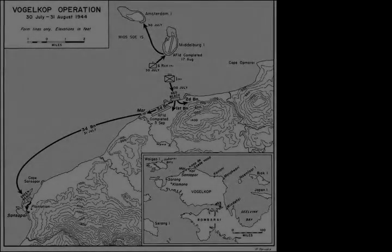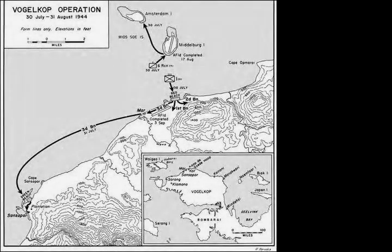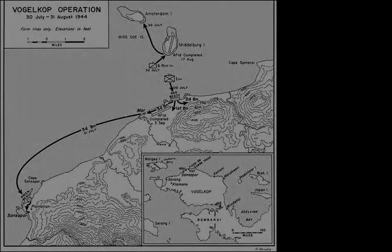The Battle of Sansapur was an amphibious landing and subsequent operations around Sansapur, Dutch New Guinea on the Vogelkop Peninsula during World War II.